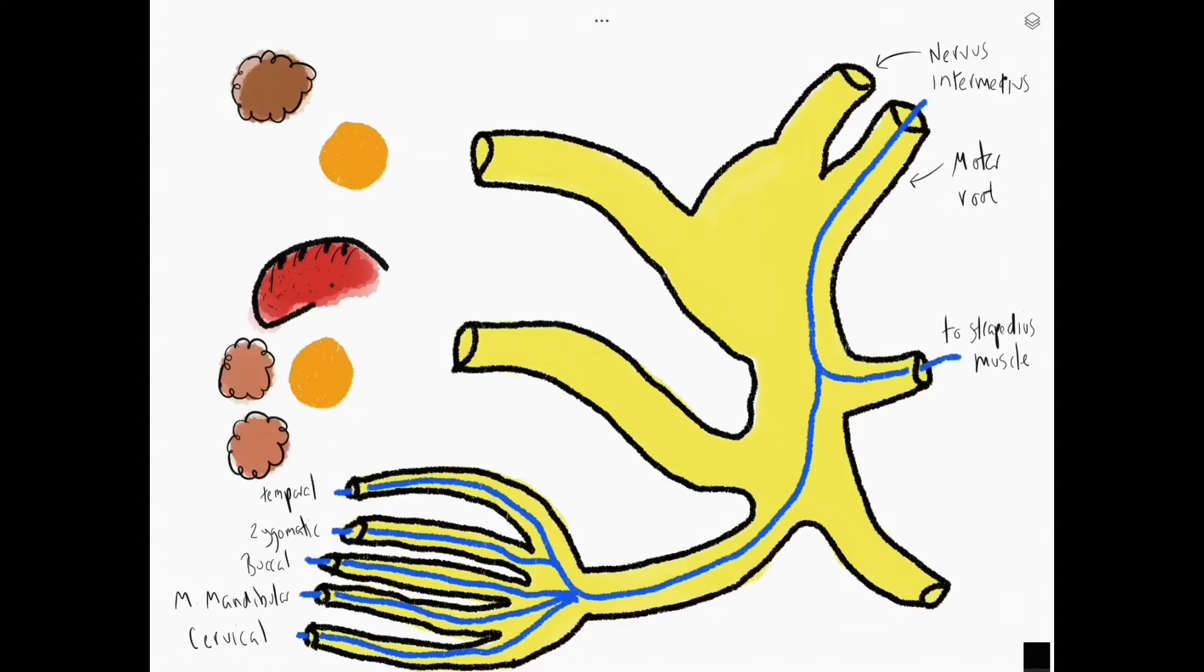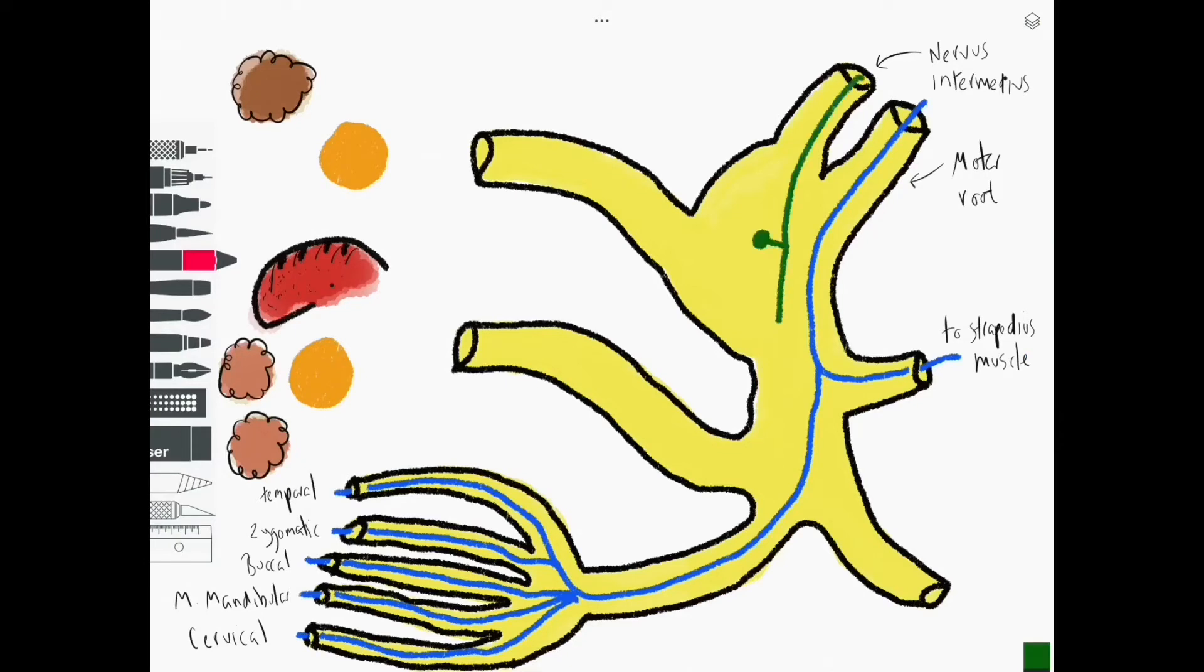Next up we have some general sensory fibers, and these are often forgotten, but there's a small contribution of general sensory innervation around the auricle and the pinna of the ear, and we can see this coming on in green. This is a sensory fiber, so therefore it has a cell body located inside the geniculate ganglion.